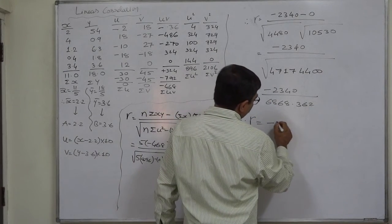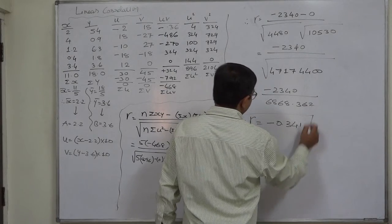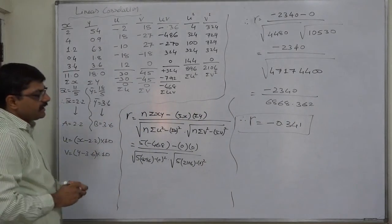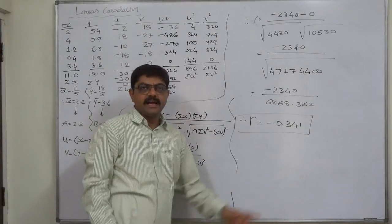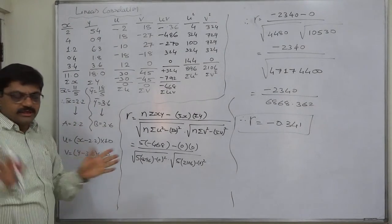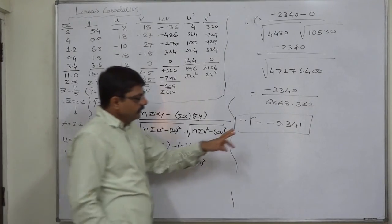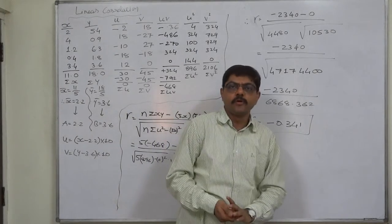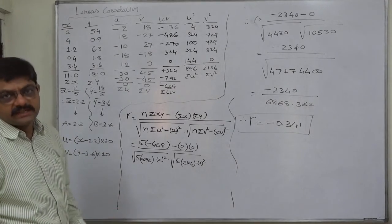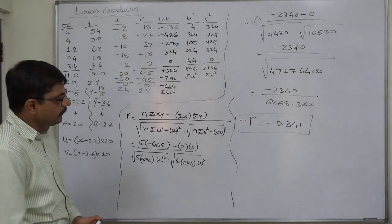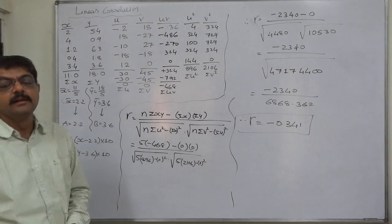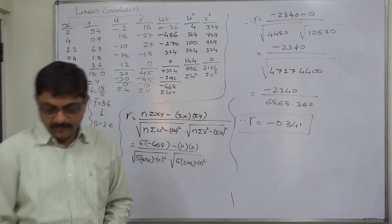The negative value means there is negative correlation between the two variables. That means the direction of change in the values of x and y is opposite to each other. The value is only 0.341, that means partially negative correlation, very low degree because it is less than 0.5. So low degree, partially negative correlation between the two variables. That is the ultimate interpretation. That's it, thank you very much.